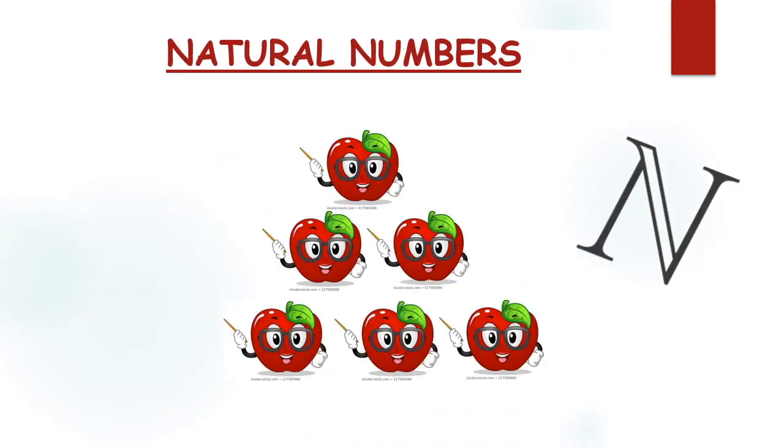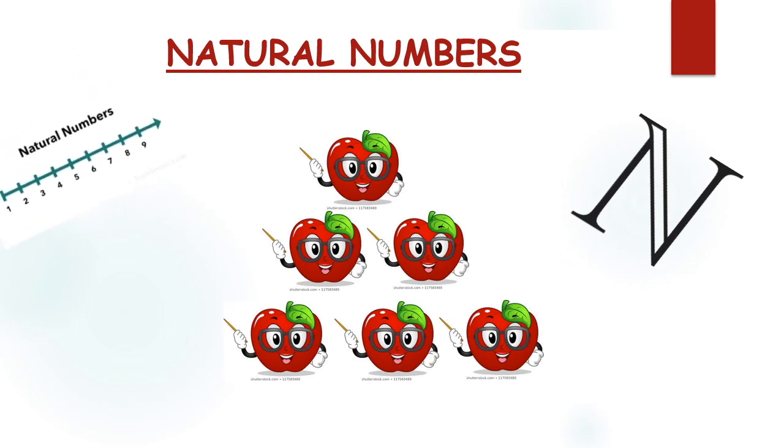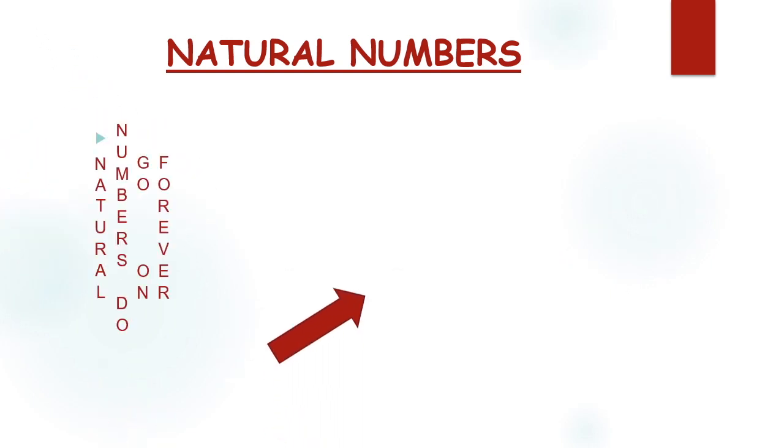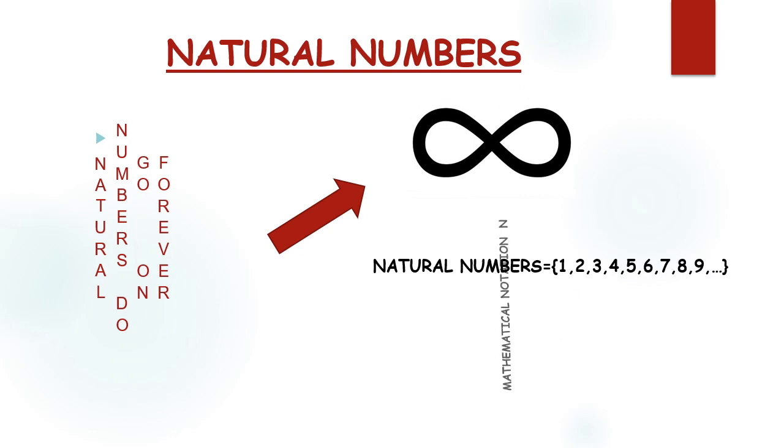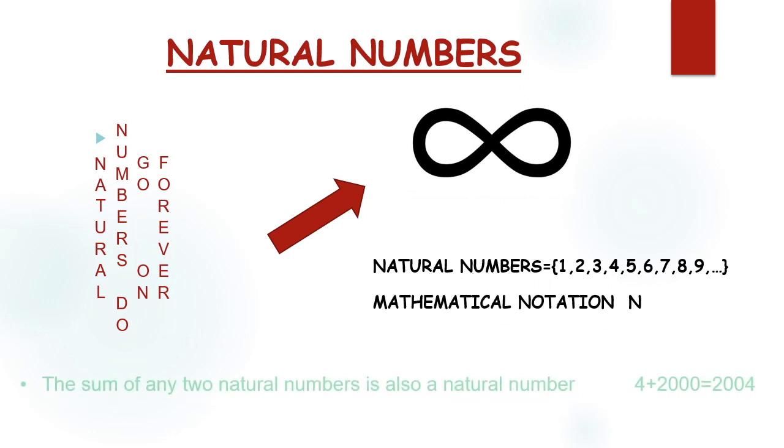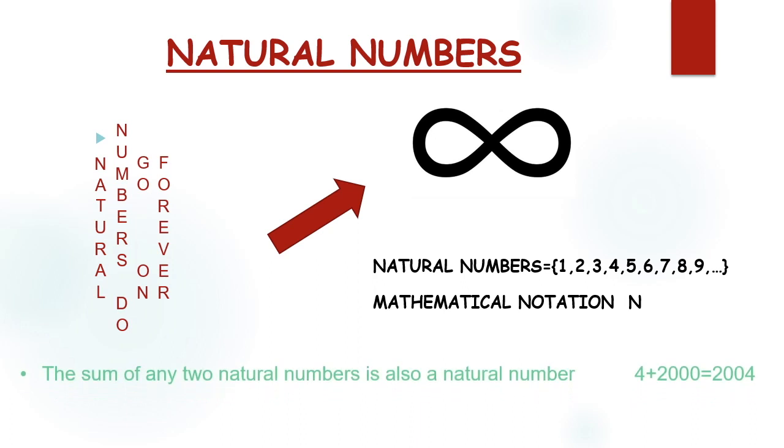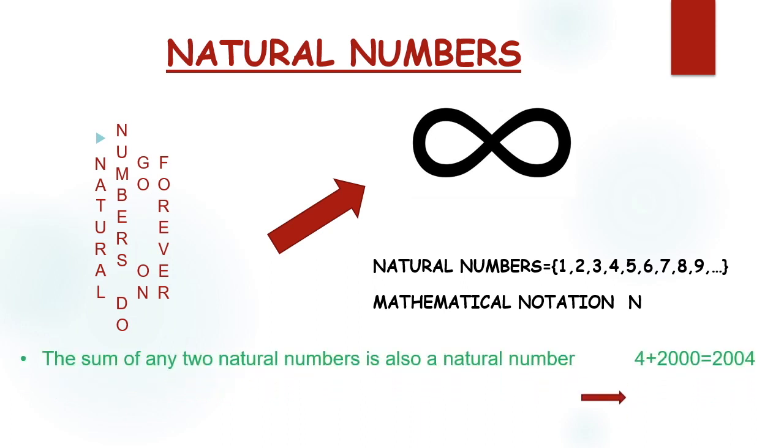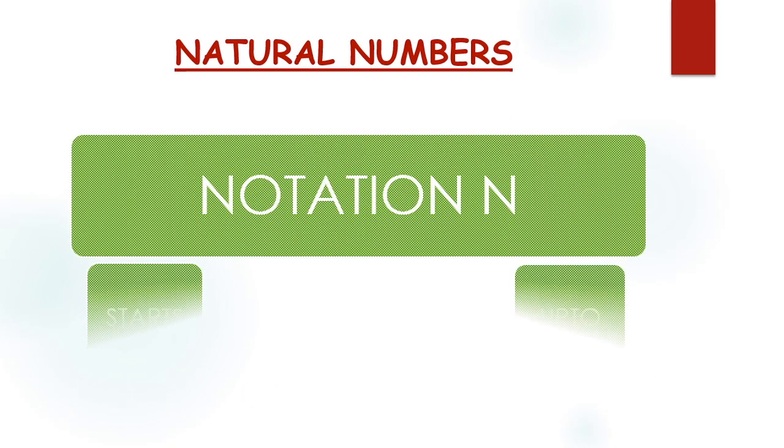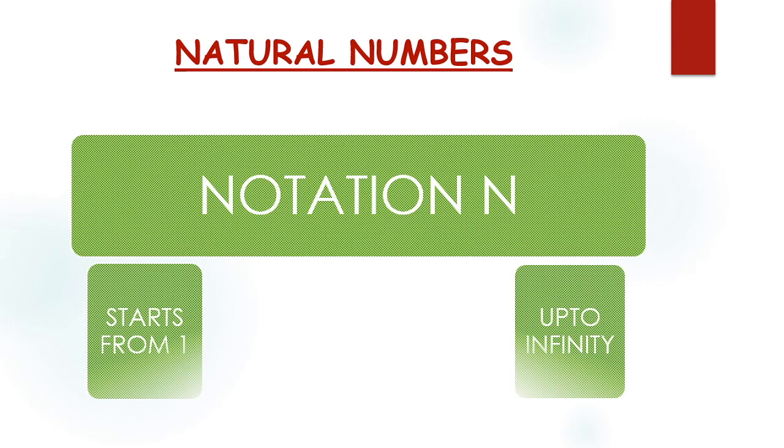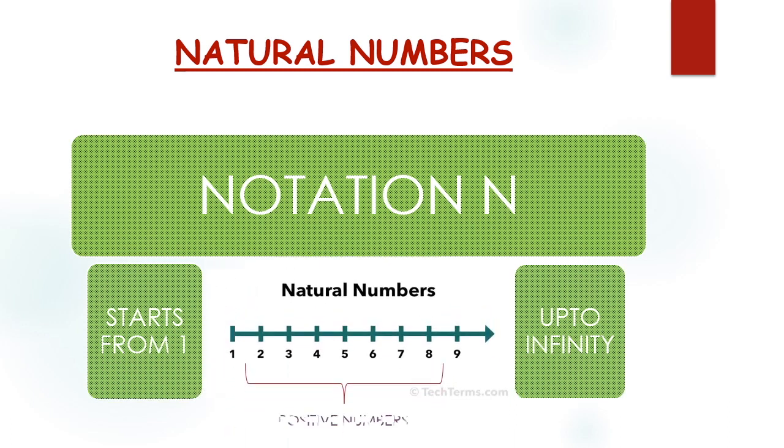Natural numbers are a part of the number system and are used for counting purposes, therefore they are also called counting numbers. It does not include zero, however it starts from one to infinity. The sum of any two natural numbers is also a natural number, and the product of any two natural numbers is a natural number. This is not true for subtraction and division. Natural numbers are positive in nature and are generally used for calculation purposes. The set of natural numbers is represented by the letter N.